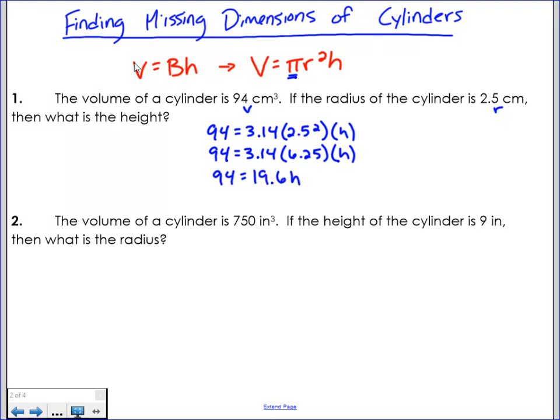And the last step is to divide out the coefficient of the variable. So I'm going to divide by 19.6. And my final answer is going to be whatever 94 divided by 19.6 is, which in this case would give me a height of 4.8 centimeters.